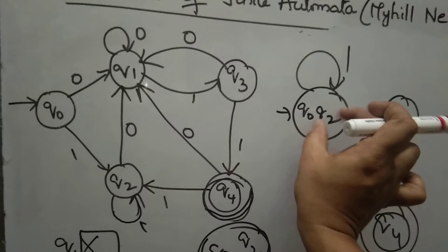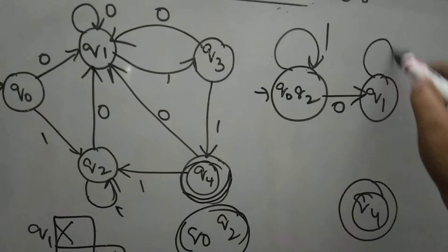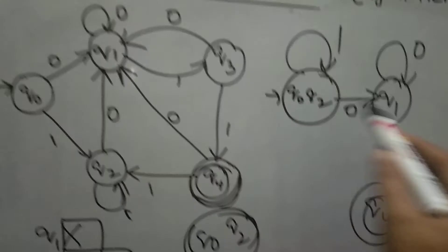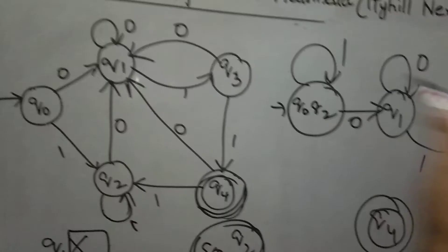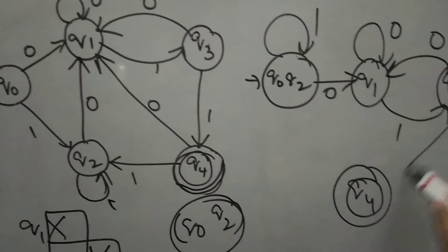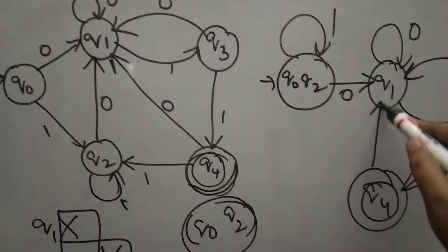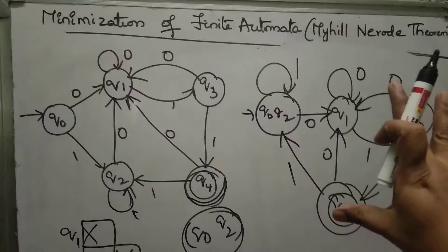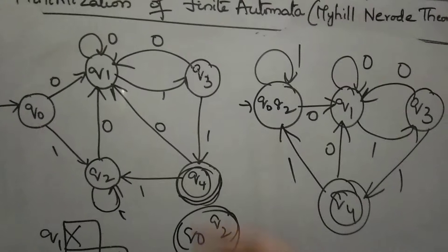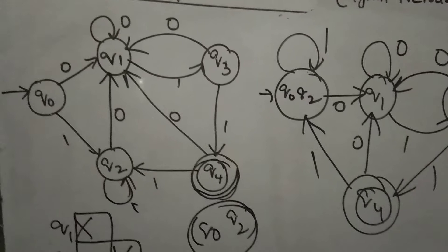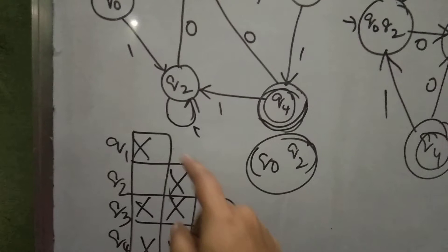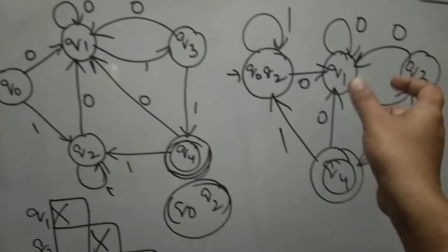So unmarked pair Q0, Q2 combined, Q1, Q3, and Q4 final state. This is the minimized version of the given finite automata. You can reduce the states and design an efficient DFA. This is Myhill-Nerode theorem. Once table is filled, unmarked pairs are combined as one state, remaining states and final state remain separate, then design the transition diagram. Thank you for watching my videos.